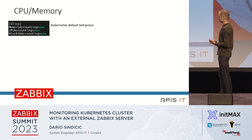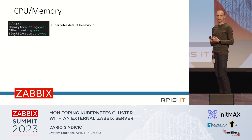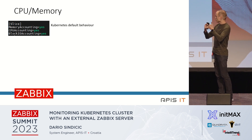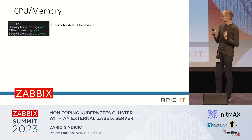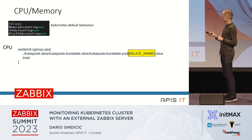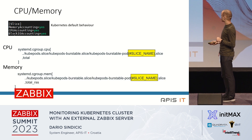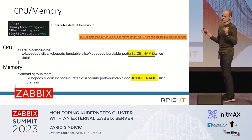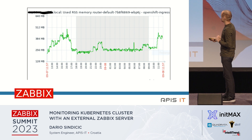For pod lifecycle data and item prototypes: by default, memory accounting and CPU accounting are turned on in systemd. So we can, without any problem, utilize the systemd module to collect CPU usage and total RSS memory for our pods. We can raise a trigger when, for example, CPU usage exceeds 30% on some host. This is how it actually looks in the production environment.